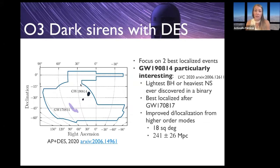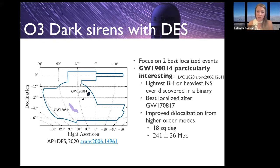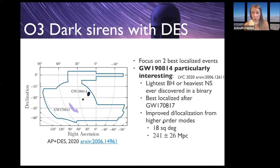GW190814 is particularly interesting. It was the best localized event in terms of volume, second only to GW170817. It had an 18 square degree localization at 240 megaparsecs, with improved distance and localization from higher-order modes. The LIGO-Virgo collaboration showed this event came from a binary containing either the lightest black hole or the heaviest neutron star ever seen in a binary — a very interesting result.